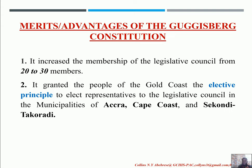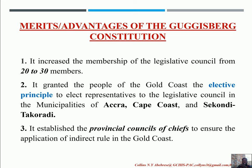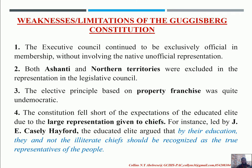The third merit is that the 1925 Constitution established the Provincial Council of Chiefs to ensure a correct application of indirect rule in the Gold Coast, because that is what the British governor had always wanted. With Guggisberg creating the provincial council of chiefs and giving them six membership seats, as compared to the 1916 Clifford Constitution where there were only three, was also a good thing about the 1925 Constitution.